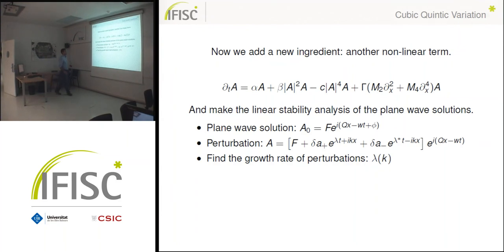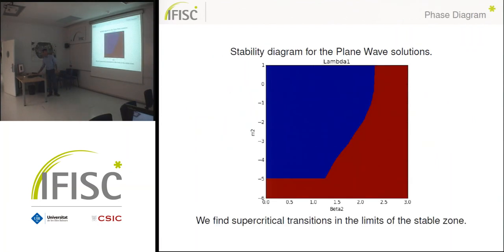So what we tried was to add another non-linear ingredient to the formula to try to see if that leads to chimeras. We added this kinetic term and repeated stability analysis of the plane waves. Here in this stability diagram that we found for the plane waves, we repeated the process of looking for the transitions and the order parameters. But again we found that the transitions were supercritical, so we didn't find chimeras here.